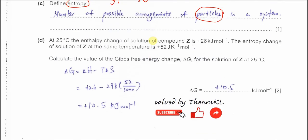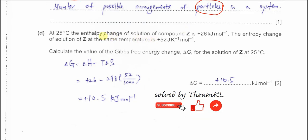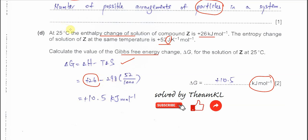Part D: this is a calculation of Gibbs free energy. The enthalpy change of solution of compound Z is +26 kJ mol⁻¹ and the entropy change of solution at the same temperature is +52 J mol⁻¹ K⁻¹. Use the Gibbs equation: ΔG = ΔH − TΔS. Substitute the values, but be careful — entropy is in joules so divide by 1000 to convert to kJ. So: ΔG = 26 − 298 × (52/1000) = +10.5 kJ mol⁻¹.